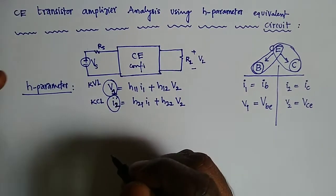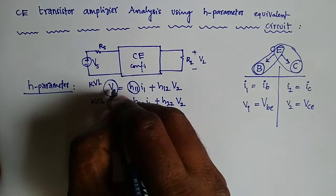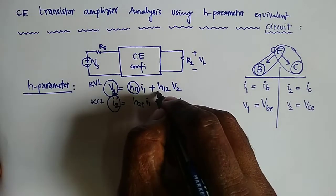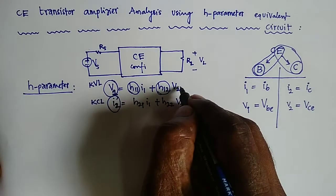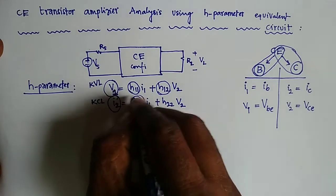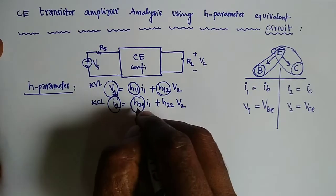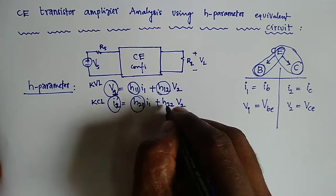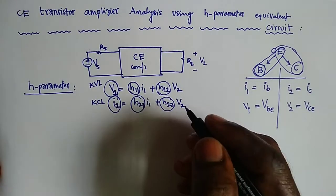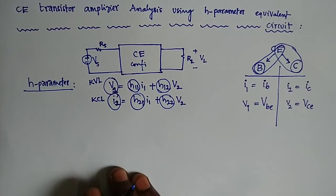H11 = V1/I1, which is a resistance. H12 = V1/V2, which is the reverse voltage gain. H21 = I2/I1 when V2 = 0, which is the forward current gain. H22 = I2/V2, which is an admittance.